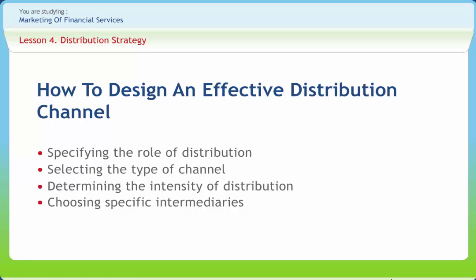The service firm should be clear about the role it envisages for distribution in the context of the other elements of its marketing mix. The distribution should synchronize with the other marketing orientation and objectives. ICICI Bank was the first to extensively use ATMs to achieve quick growth, market penetration, and avoid the dangers of variability. The selection of distribution is affected by many factors which play a significant role while choosing the channel.